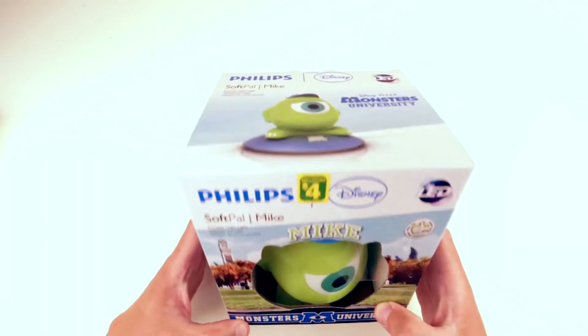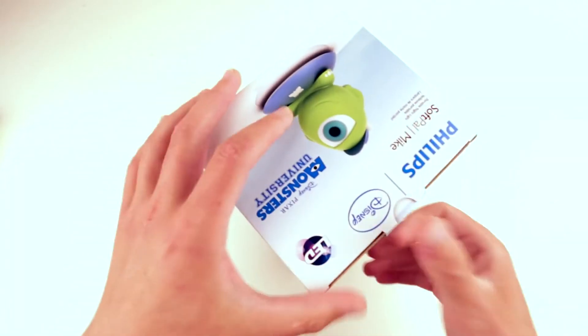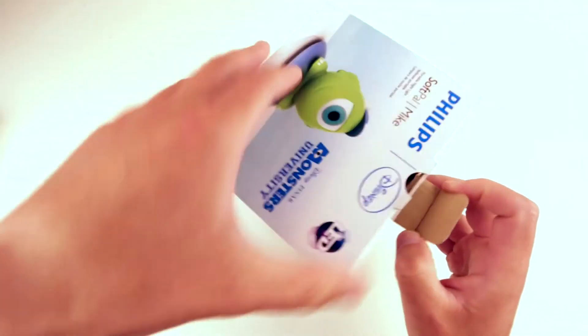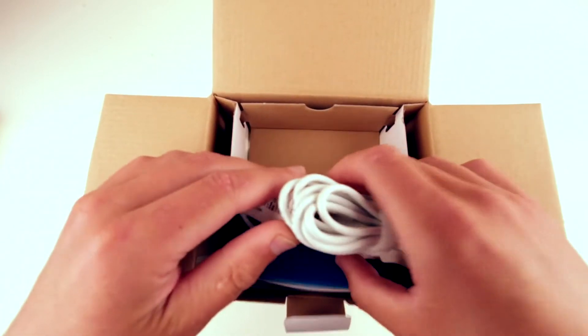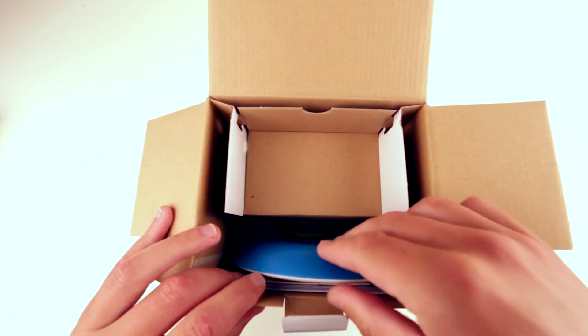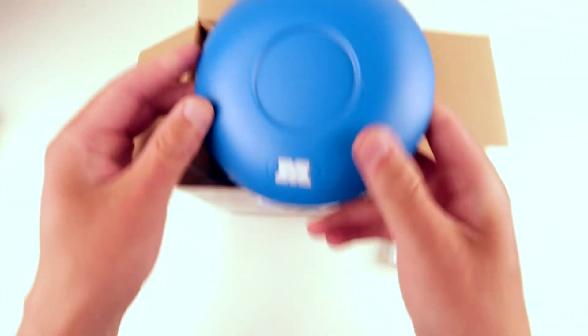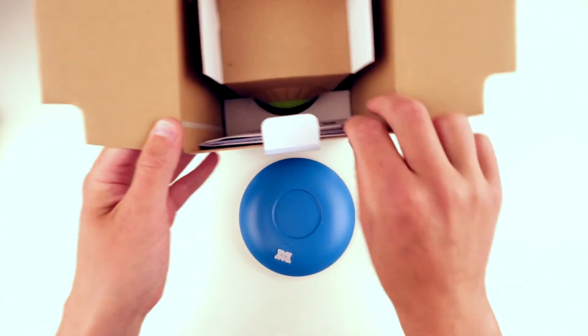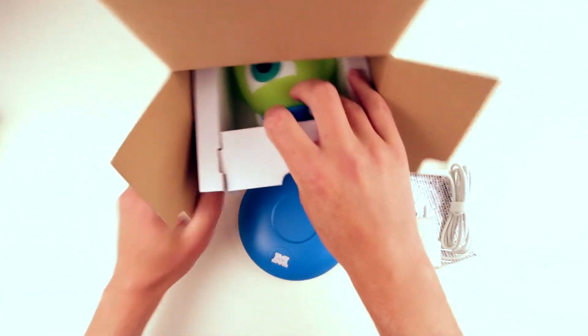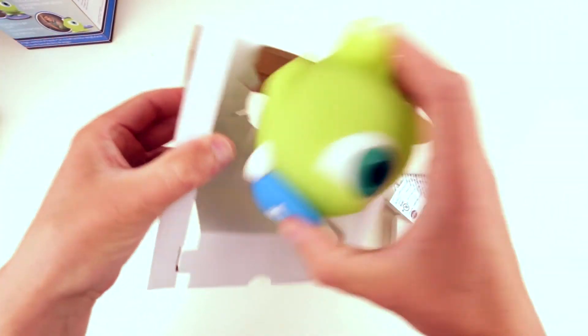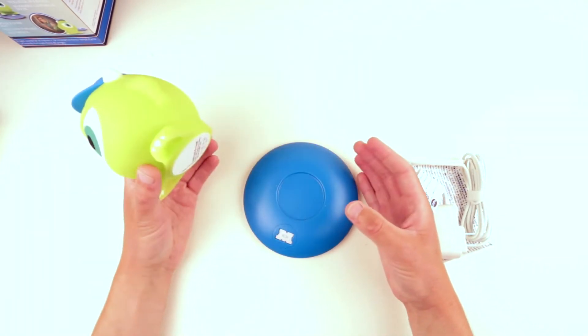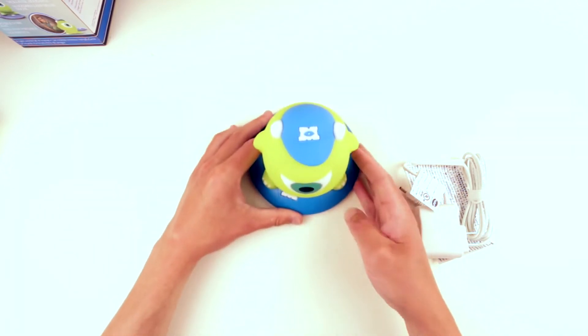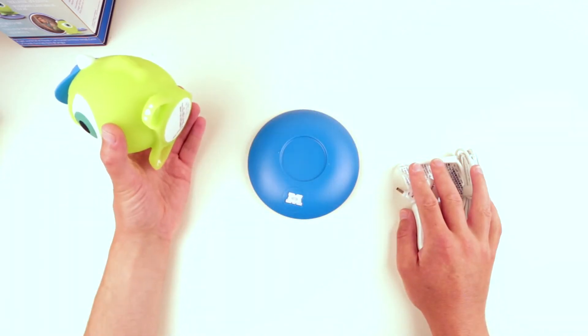We have a pretty cute box here, definitely kids oriented, and it's made by Philips, so that's already something interesting. Here we have the power supply, something that looks like a UFO, and we have Mike himself. Let me pull Mike out of here.